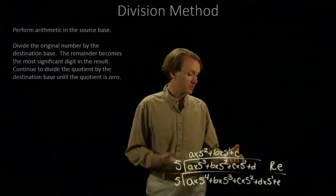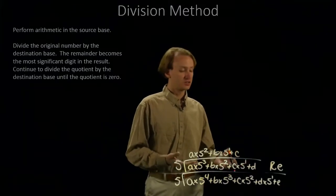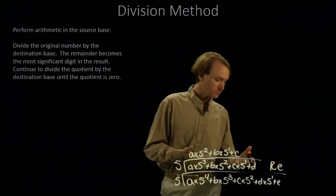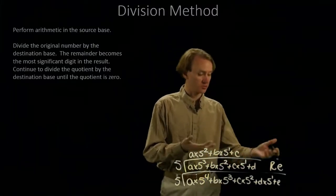And then, again, d is something less than 5, so I can't divide it by 5. There won't be anything left afterwards. So, now I'm just going to get a remainder of d.